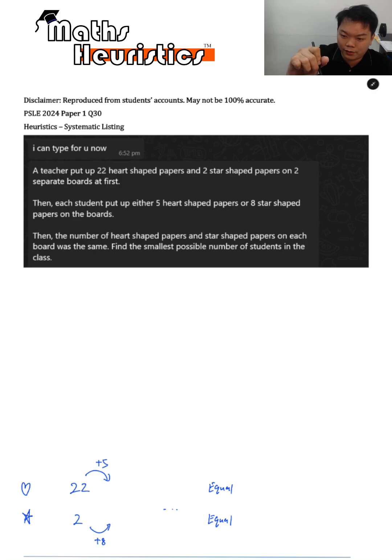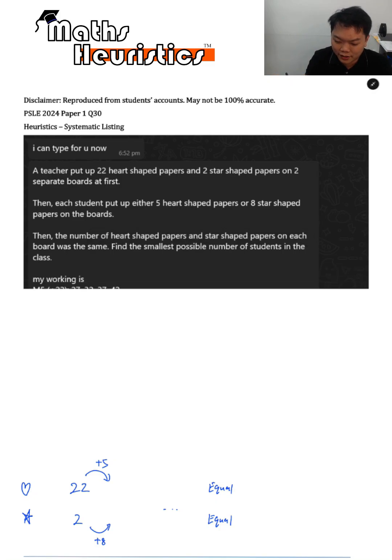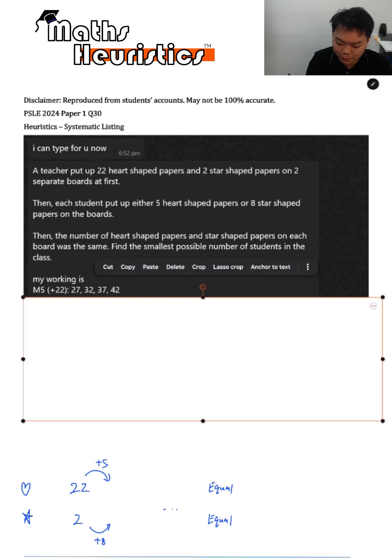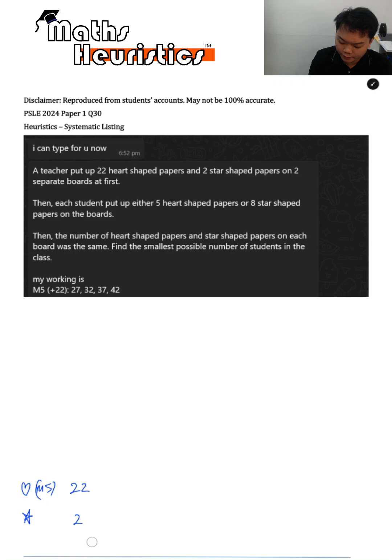So let's see what my student did. Let's call him J. His working is to list out the multiples of 5. So it's 22, you plus 5 give you 27, plus 5 to give you 32.